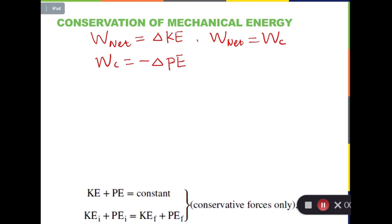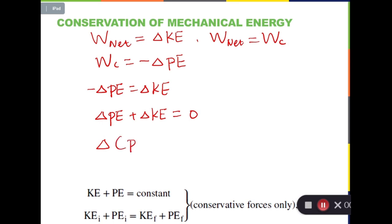So if we combine all three equations, we get negative ΔPE equals ΔKE. Moving these two terms together, we have ΔPE plus ΔKE equals 0, or Δ(PE + KE) equals 0. This means that KE plus PE is equal to a constant. We can also write this as KEi plus PEi equals KEf plus PEf, where I means initial and F means final. This is called conservation of mechanical energy.